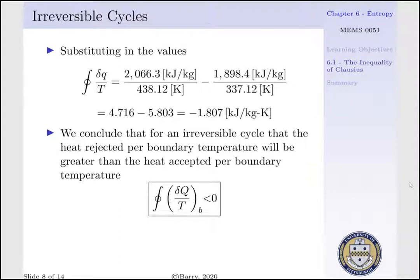Once we cover Lecture 19 and discuss the change of entropy for processes and cycles, we can calculate the total change of entropy for this irreversible Rankine cycle, and this number will reappear. We conclude that for an irreversible cycle, the heat rejected per boundary temperature will be greater than the heat accepted per boundary temperature. That is, for an irreversible cycle, the cyclic integral of delta Q per T evaluated at our respective boundary temperatures is less than zero.